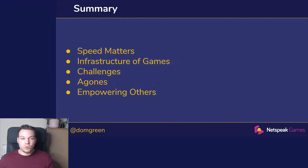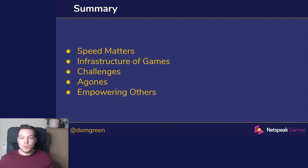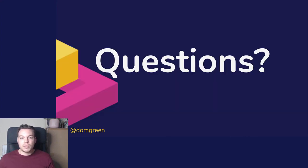So what have we looked at today? We've talked through why speed matters in the games industry — it's about getting into the hands of users and finding the fun experience. We've looked at the infrastructure of games: the authentication service, the matchmaker, and specifically the dedicated game servers. We hit some issues running them inside Kubernetes with vanilla deployments, but we utilized open source — especially Agones — to overcome those obstacles: mapping host ports to container ports and scaling up and down with ease. Finally, we looked at how using open source and specifically GitOps can really empower people on the team. Thank you very much for listening today, and if you have any questions I'd be happy to answer them.